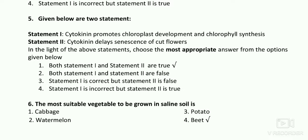Next, two statements on cytokinin. Statement one: cytokinin promotes chloroplast development and chlorophyll synthesis — true, because cytokinin regulates nuclear and plastid gene expression and alters protein abundance to exert its role on chloroplast development. Statement two: cytokinin delays senescence of cut flowers — also right. Both statements are true.